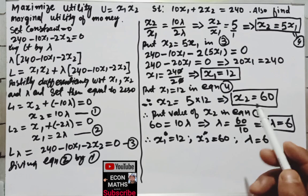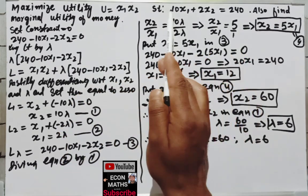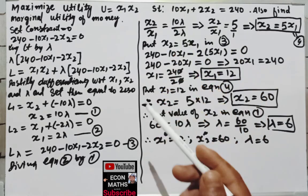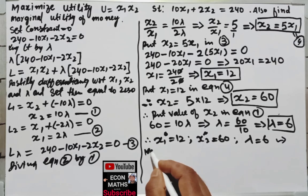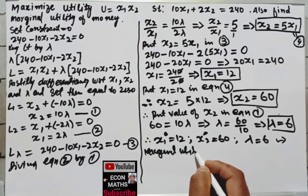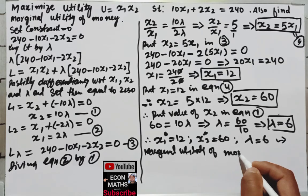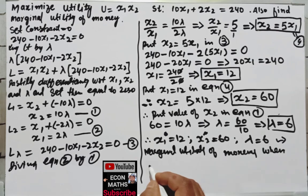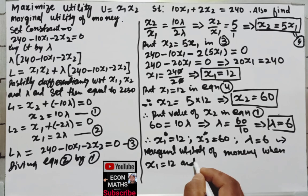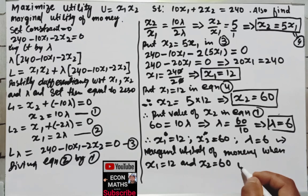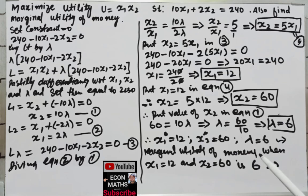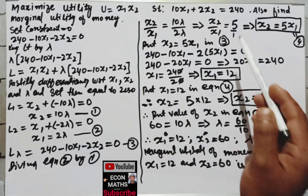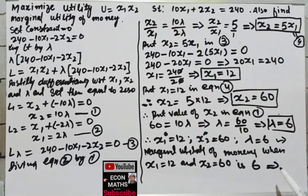The value of lambda tells us that if there is an incremental one unit change in the constant of this constraint, the utility will change by 6 units. That means the marginal utility of money when x1 is 12 and x2 is 60 is 6. If the budget increases by 1 unit, utility will increase by 6 units.